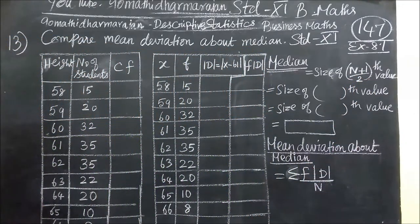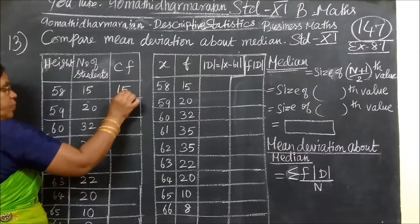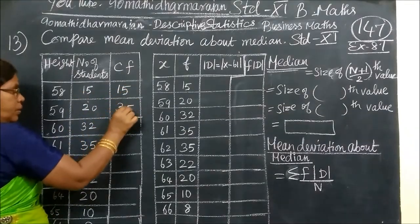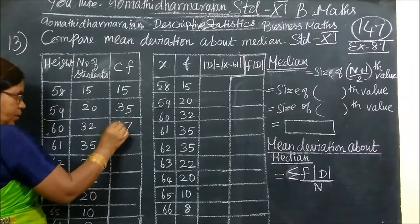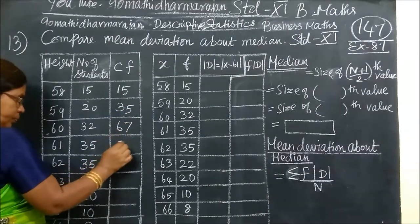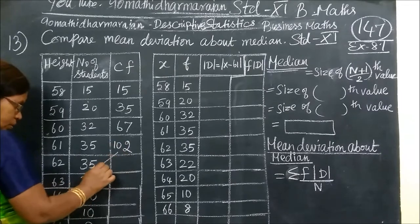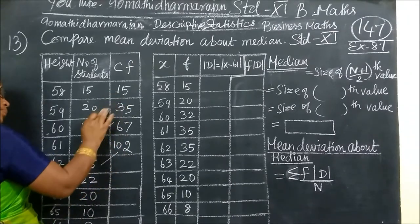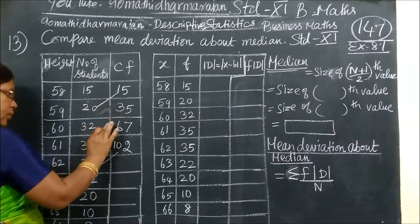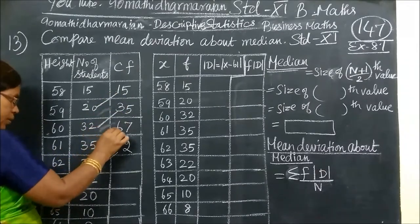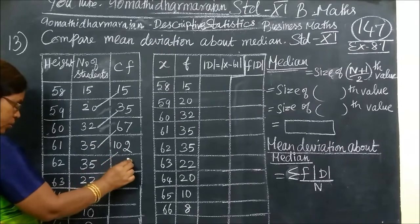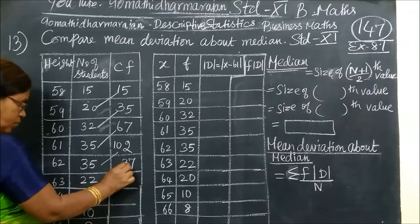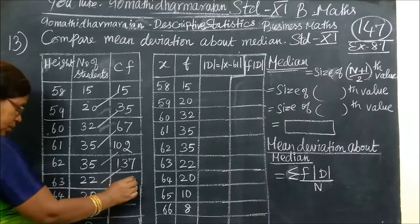Further we are using the cumulative frequency. So this is the start point. Remove 50, then 35, then 67, 102. Then here, then 0, 137.